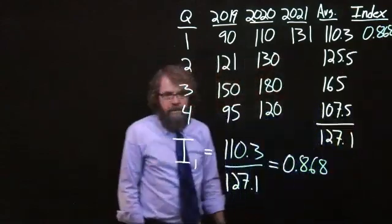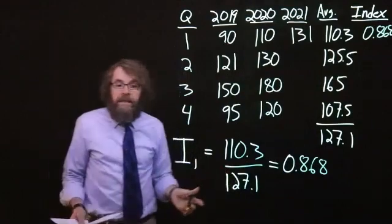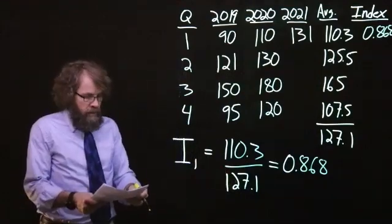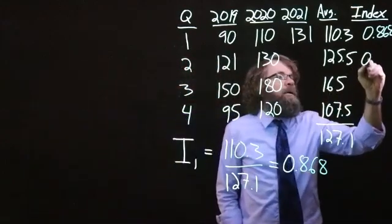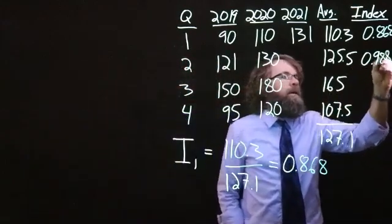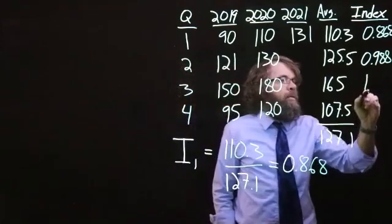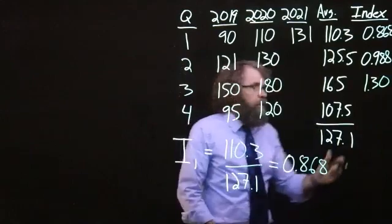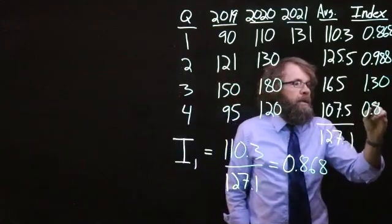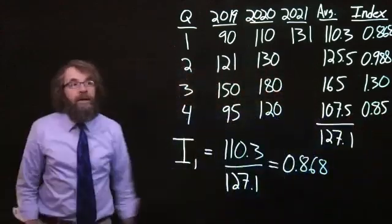So we have our at the edge of my board there. Sorry. So 0.868 is our seasonal index for the first quarter. For the second quarter, 0.988. For the third quarter is 1.30. And for the fourth quarter, it is 0.85. So that's how we calculate the seasonal index.